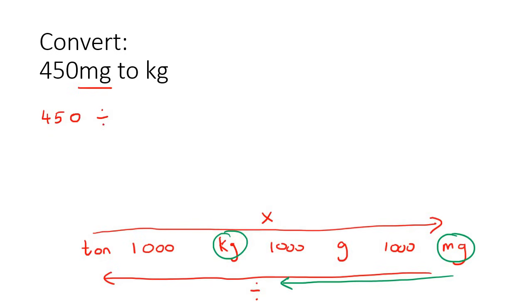Then we're going to divide by all the numbers that we pass. So what do we pass? We pass a thousand, and then we pass a thousand again. And so if we had to go calculate this, then you're going to end up with 0.00045.